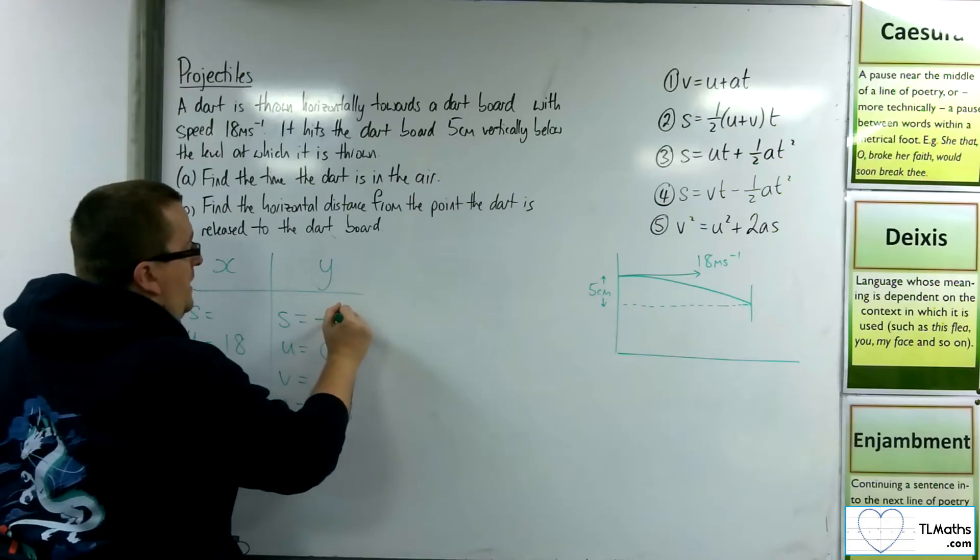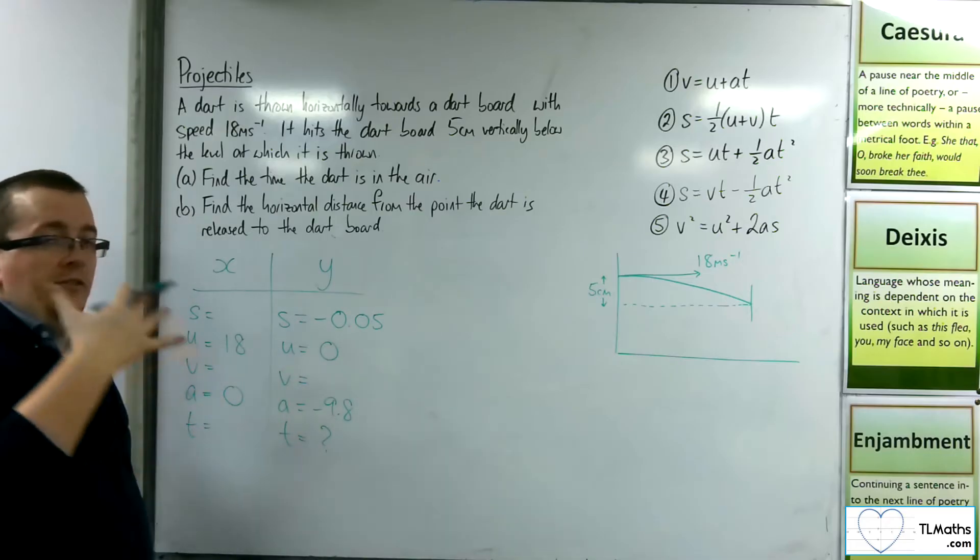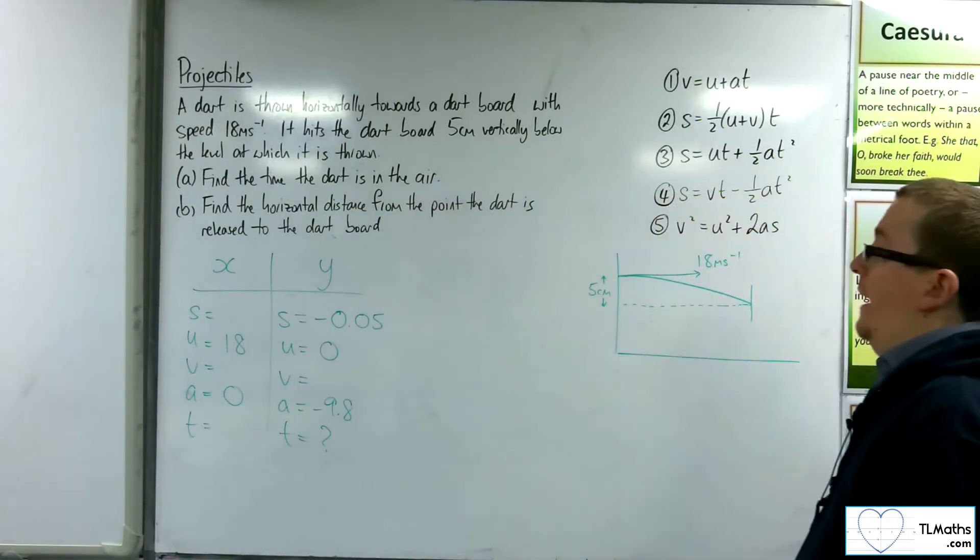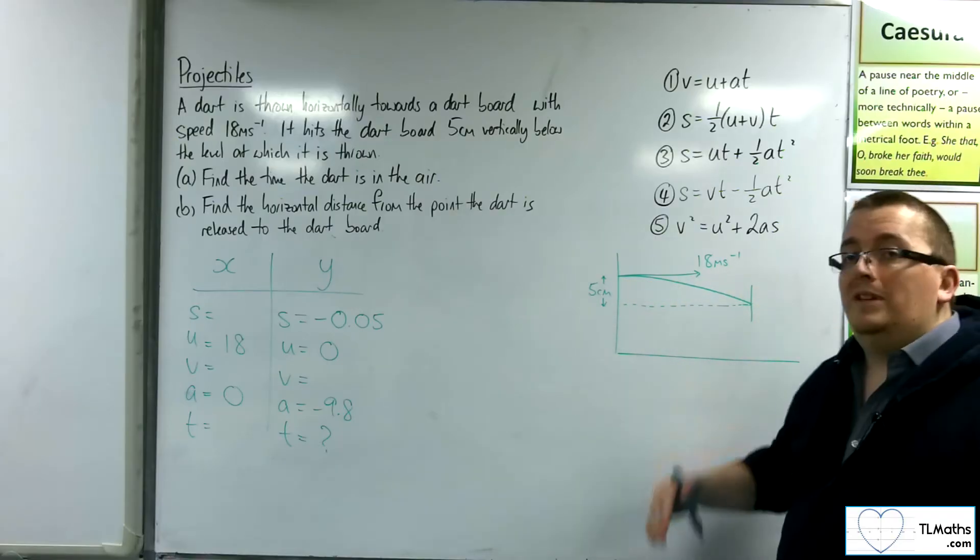It will be minus 0.05, because it's 5 centimeters, we need it to be in meters. And it's a drop down, so we are minus 0.05 from where we started.